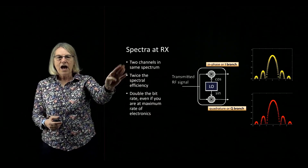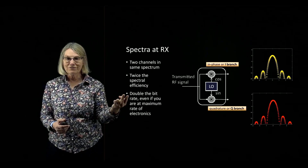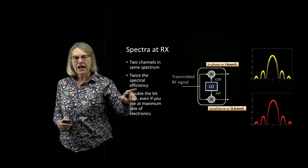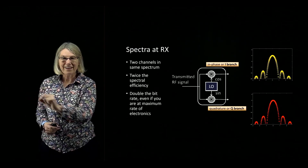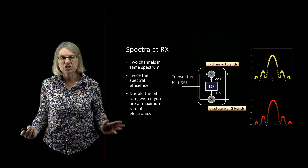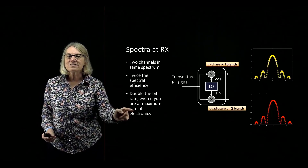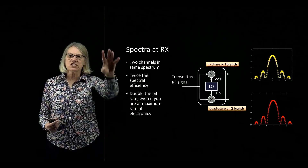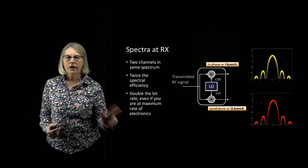So two channels occupy the same spectrum, which means we get twice the spectral efficiency. Because we're using two channels, we are doubling the bit rate. Even though there's a speed limit from the electronics — we cannot modulate faster than the electronics can achieve — IQ modulation allows us to make the bit rate twice as high as the switching rate of the electronics. This is another way of understanding how you get higher spectral efficiency using coherent detection.